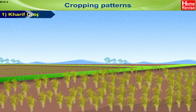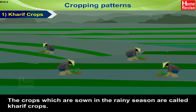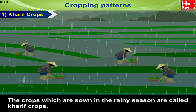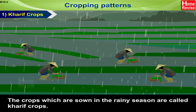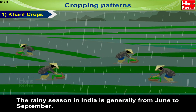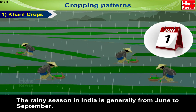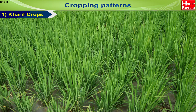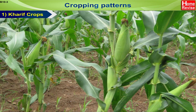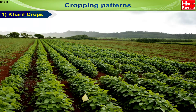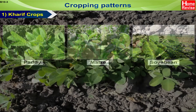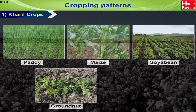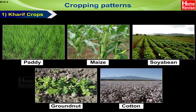Cropping patterns. First, Kharif crops. The crops which are sown in the rainy season are called Kharif crops. The rainy season in India is generally from June to September. Examples of Kharif crops include paddy, maize, soya bean, groundnut, cotton, etc.